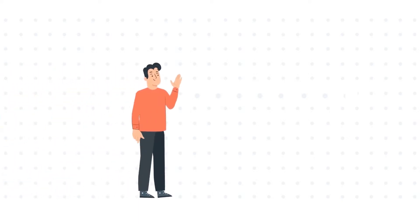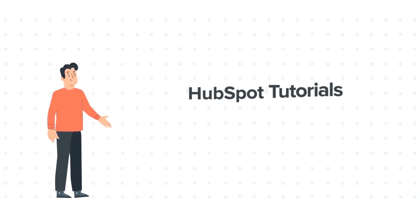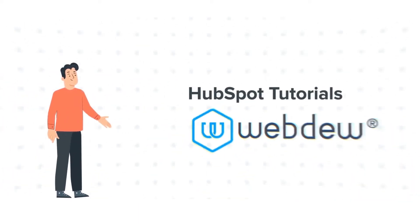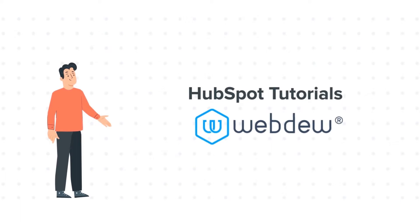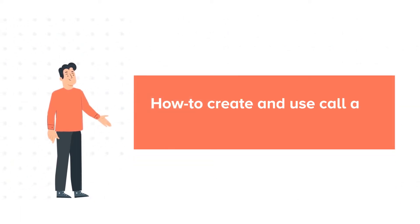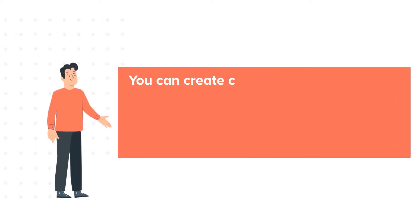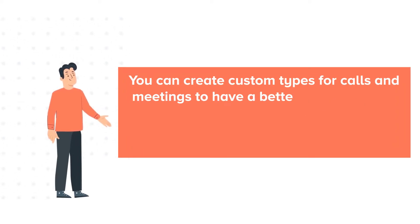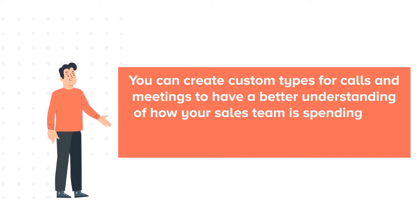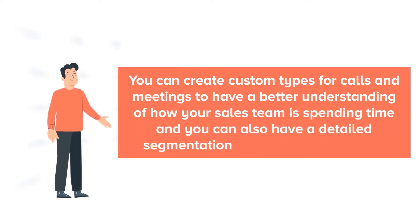Hello and welcome to HubSpot tutorials by Webdo. This is Bob and today's tutorial is about how to create and use call and meeting types. You can create custom types for calls and meetings to have a better understanding of how your sales team is spending time, and you can also have detailed segmentation of your sales activities.